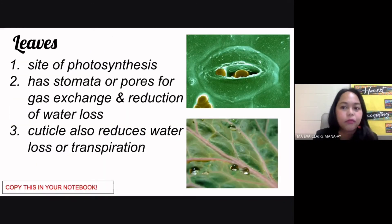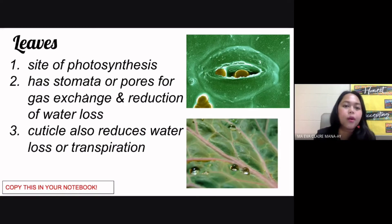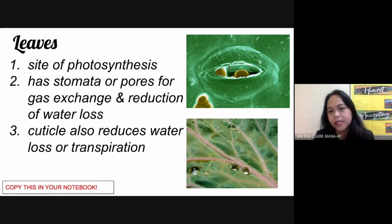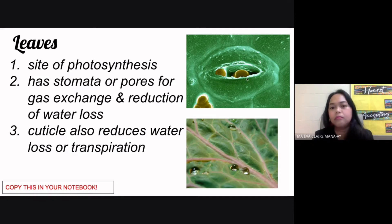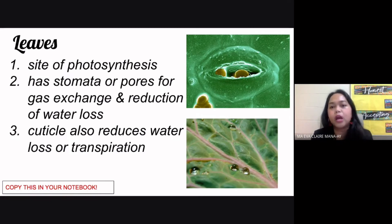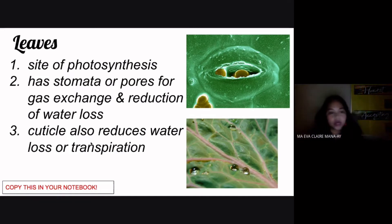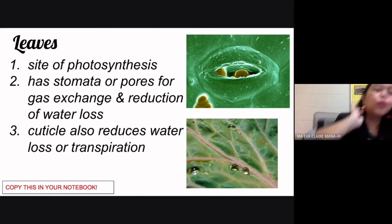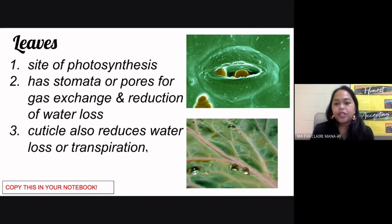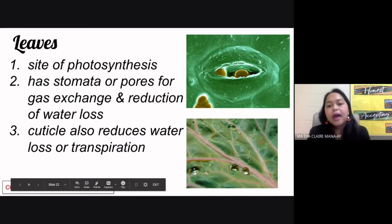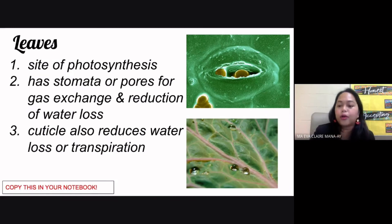The last part of the plant we are going to study is the leaves. Very importantly, this is the site of photosynthesis — this is where photosynthesis happens. Your leaves also have stomata, or pores, for gas exchange and reduction of water loss. As you can see in the picture, this is an example of your stoma — stoma is singular, and the plural form is stomata. These pores found in the leaves function for gas exchange: the entry of carbon dioxide, the exit of oxygen gas, and they also help reduce water loss. The cuticle, which you learned about last week, also reduces water loss or transpiration — it is a waxy layer found on the leaves.